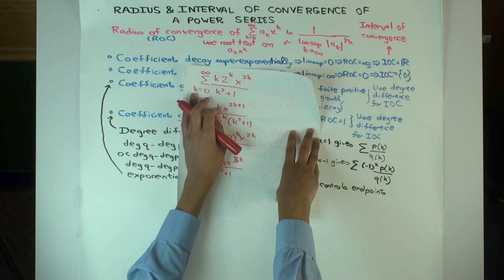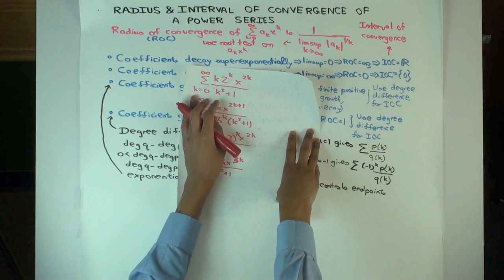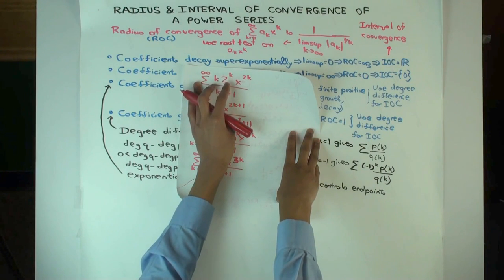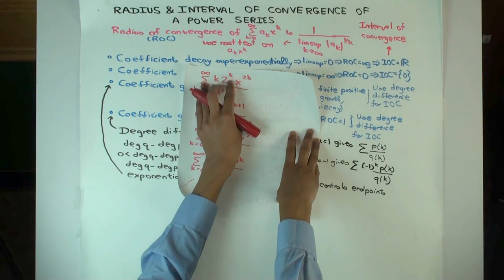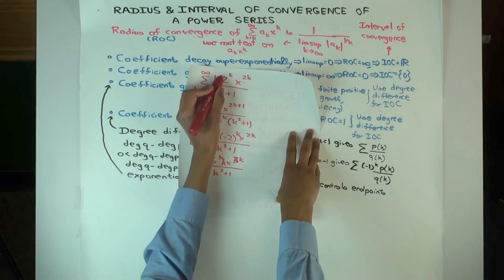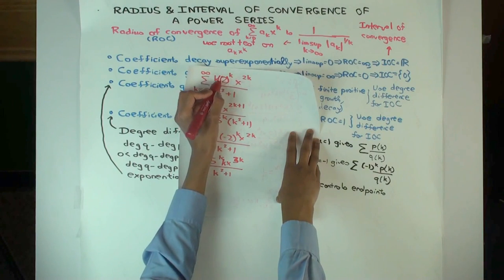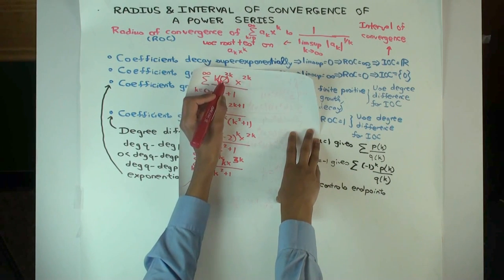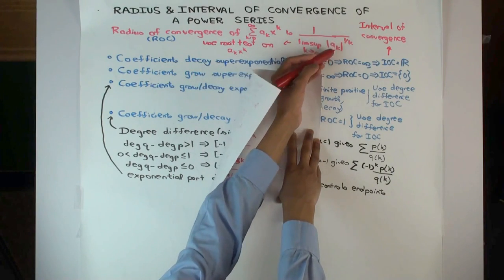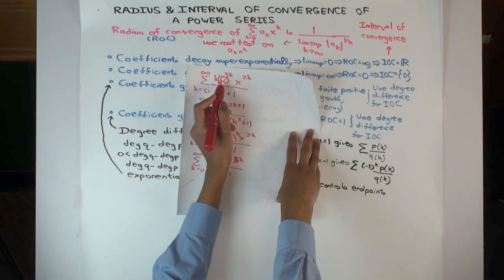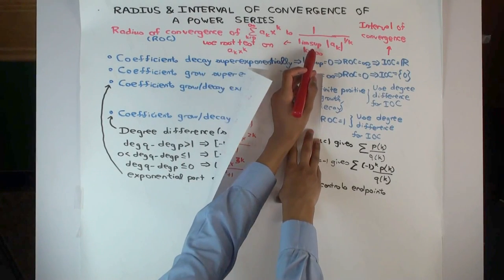The radius of convergence will be 1/√2. The growth rate of the coefficients is like √2, because the 2k-th coefficient is 2^k — so the coefficient is actually like (√2)^(2k). In order to take the limsup, you have to match the exponents. That's important. That's why we use the limsup.